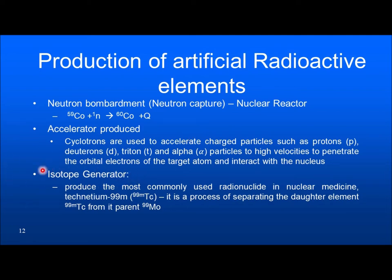The third method is the isotope generator. This is because some radioisotopes used in medicine, like technetium-99m, have very short half-lives — about six hours. Because of the short half-life, they cannot be transported as such. So they transport the parent element, molybdenum, and the daughter element technetium is in equilibrium, decaying with the half-life of the parent. The molybdenum is transported to the hospital where technetium is extracted in a generator called the isotope generator.